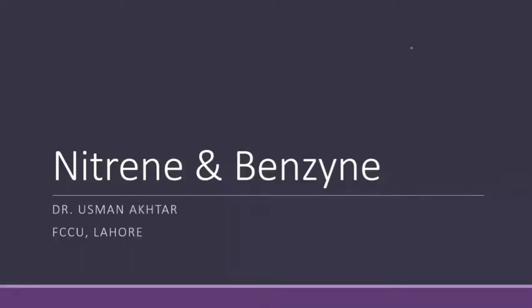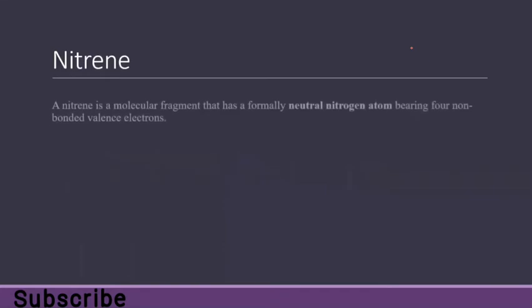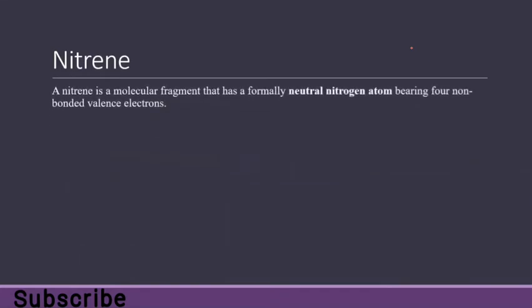Nitrines and benzynes. We will start with nitrines. A nitrine is a molecular fragment that has a formally neutral nitrogen atom bearing four unbonded valence electrons. Normally, if you think about the structure of NH3, we have a nitrogen atom attached with three hydrogen molecules and one lone pair.